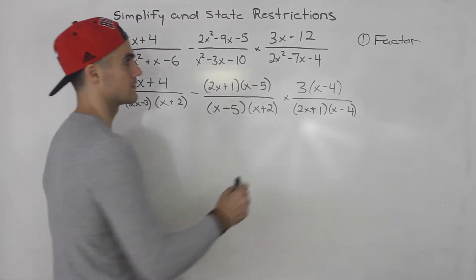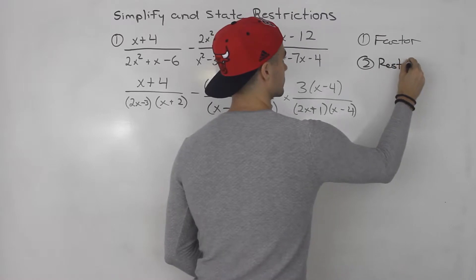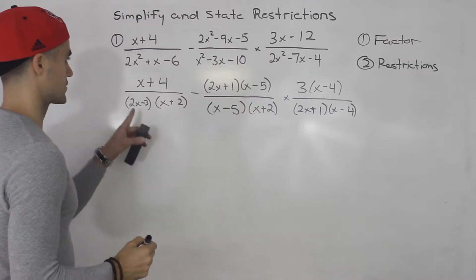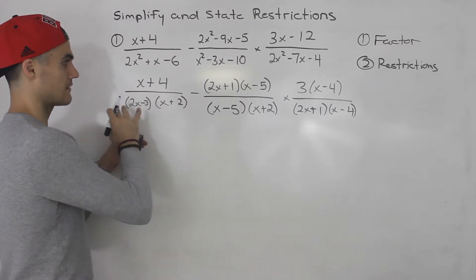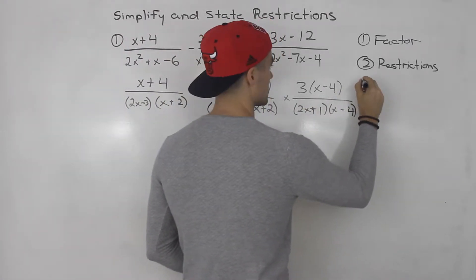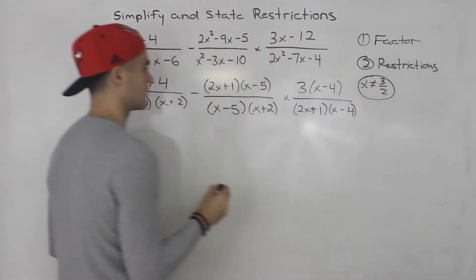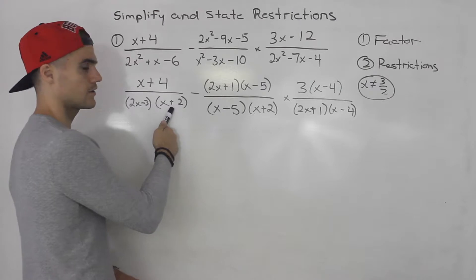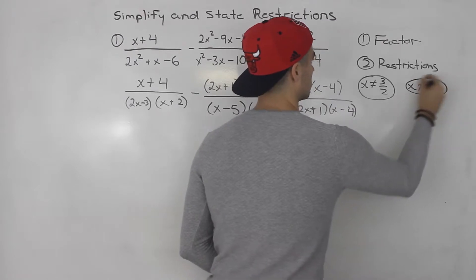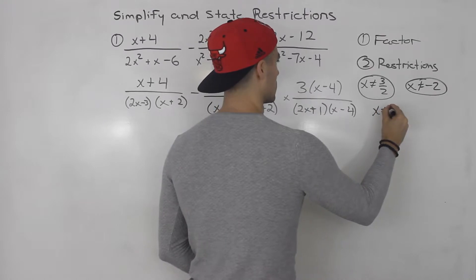Then once everything is factored, you want to get your restrictions. So notice we're going to have a bunch of restrictions here. The denominator can never be zero. So 2x minus 3 cannot equal zero, which means x cannot equal positive 3 over 2. That is one of the restrictions. Here, notice x plus 2 can't equal zero, which means x cannot equal negative 2. x minus 5 cannot equal zero, which means x cannot equal positive 5.